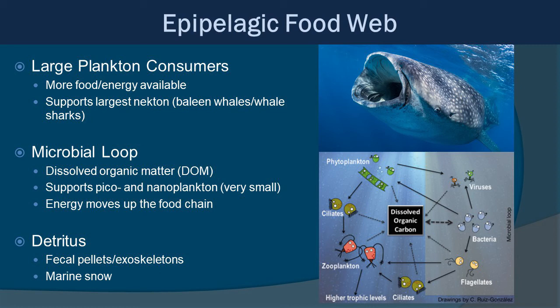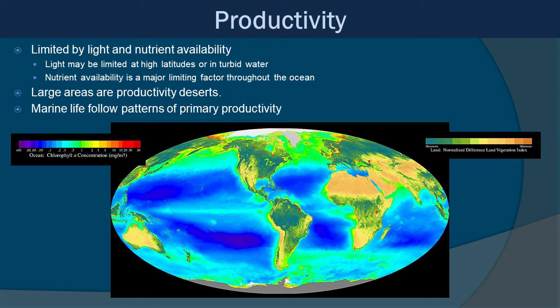Detritus is also really important to the food chain — fecal pellets, exoskeletons, and marine snow falling down towards the benthic zone. The foundation of it all is productivity, which is limited by two factors: light and nutrients. Light may be limited at higher latitudes due to shorter days during certain seasons, or due to turbidity. Nutrient availability is a major limiting factor throughout the ocean, which is why there are large areas of productivity deserts — those blue areas on the map with just not a lot going on. Marine life tends to follow patterns of primary productivity: wherever the nutrients and light are, that's where the marine life is.